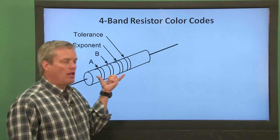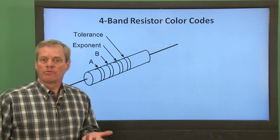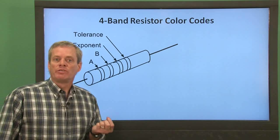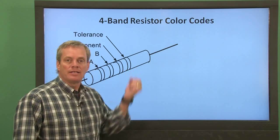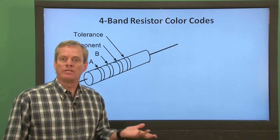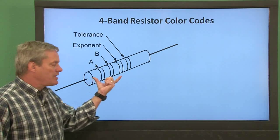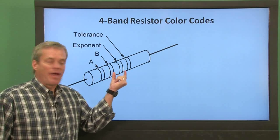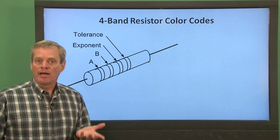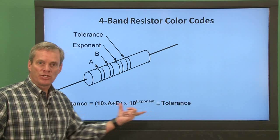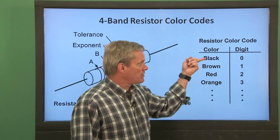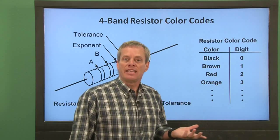Now let's look at how to read the color code on the resistors. The resistors in our analog parts kit all have a four-band color code. This means that the resistance value and its tolerance are coded in four colored bands on the resistor. The first three bands consist of a resistance value in exponential notation. The first two bands provide the mantissa of the number, and the third band provides the exponent — the power of 10 by which the mantissa is multiplied. Different colors correspond to the digits 0 through 9: black is 0, brown is 1, red is 2, and so on. A complete table is provided in the text.